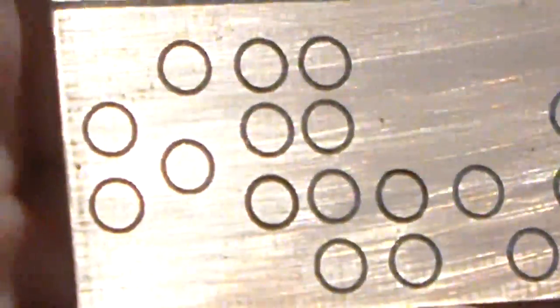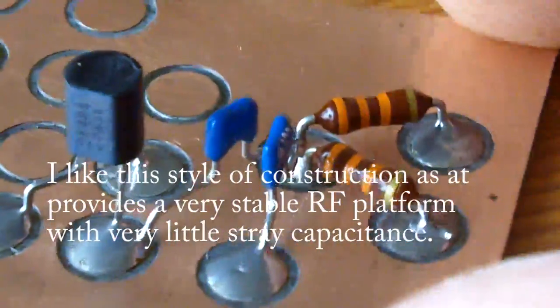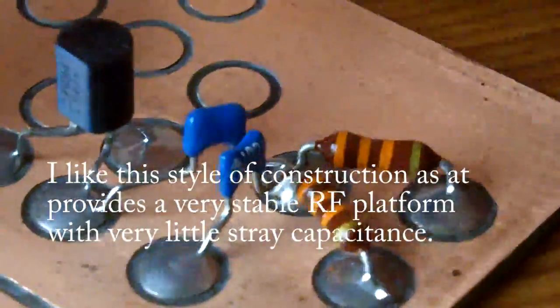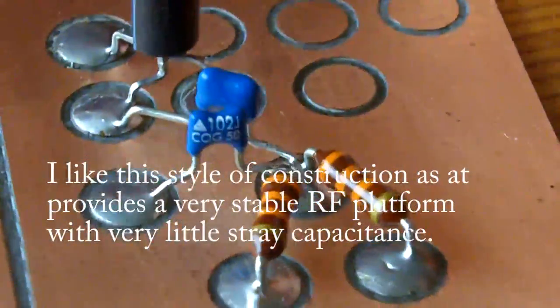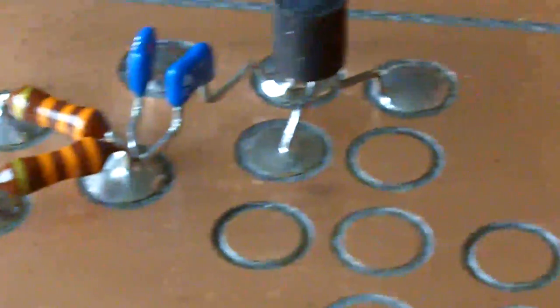And this is the circuit board. I've just got a couple of components on there to give you some idea of what's happening. I'm going to build a 3-transistor FM transmitter on this board.